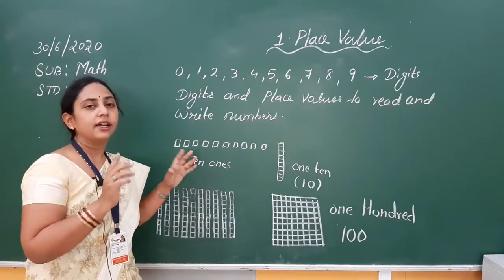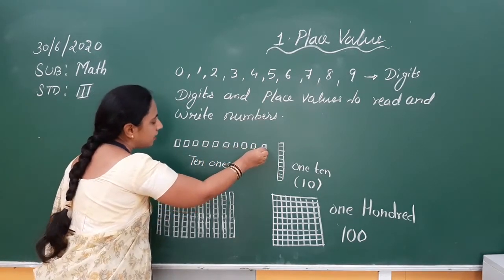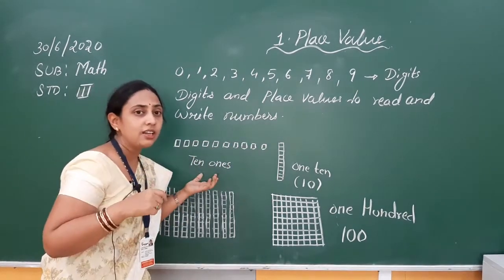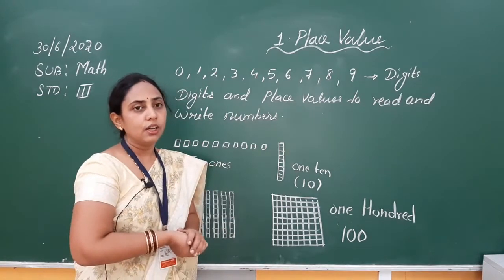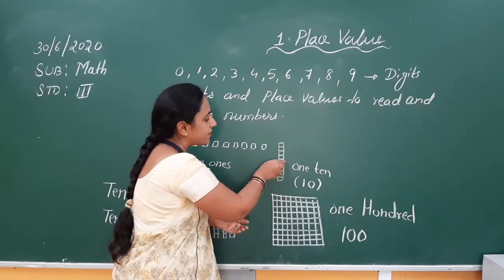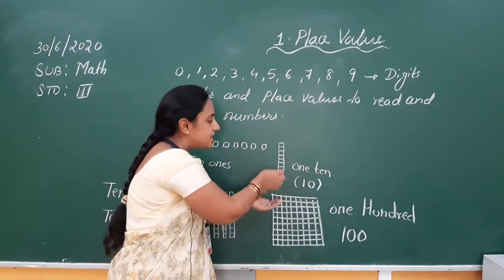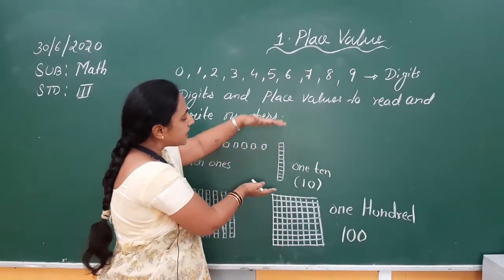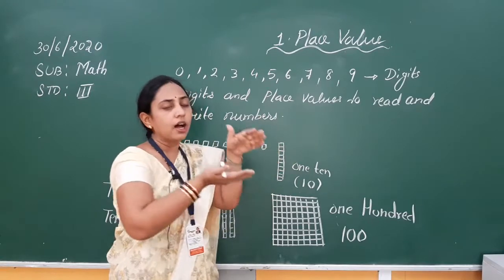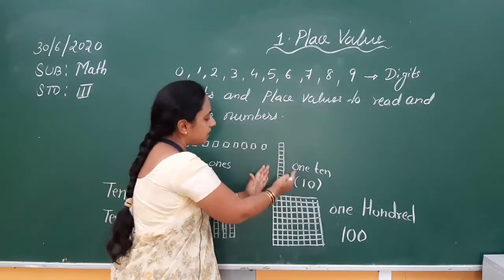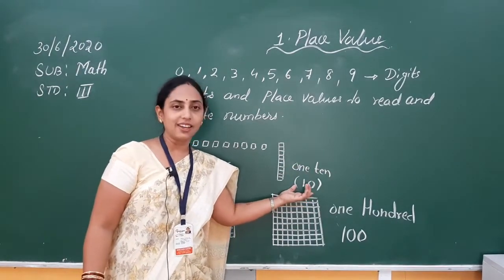Every block is 1, and like that there are 10, so we can call this as 10 ones. That means if you count 1, 2, 3, 4, 5, 6, 7, 8, 9, 10 — there are 10 blocks. Now if I combine all these blocks or arrange them vertically, we again have 10 blocks. So we can write this as 1 ten, because there is 1 big block that contains these small blocks — that means 10.